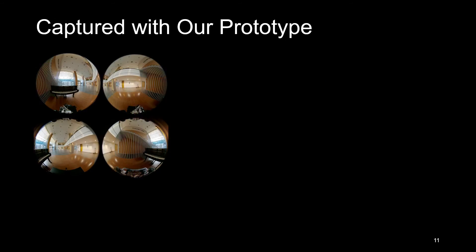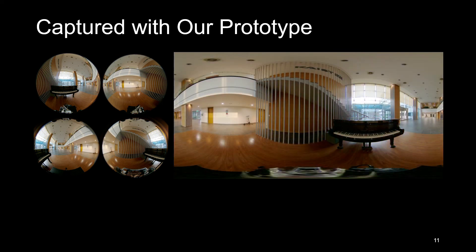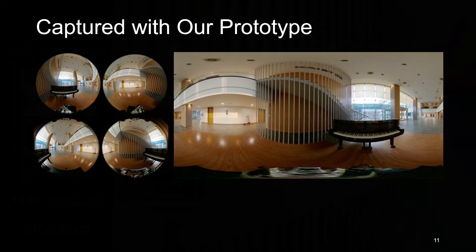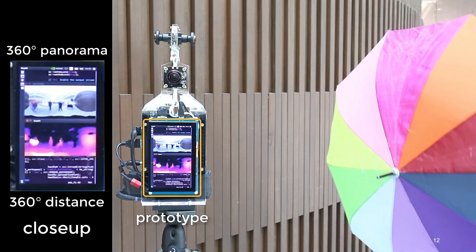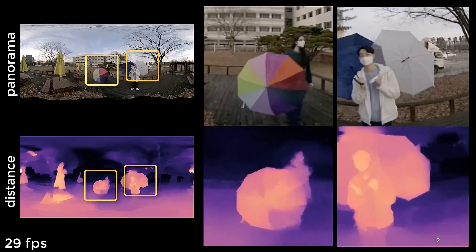From four fisheye cameras, our method is able to estimate an omnidirectional distance map within 34 milliseconds on the embedded board. It also provides a high-resolution panorama. Here is our prototype capturing and estimating RGB-D panoramas in real-time.